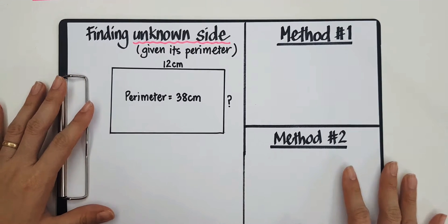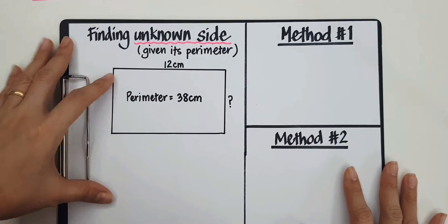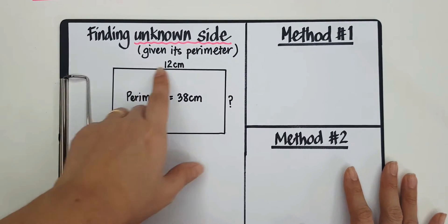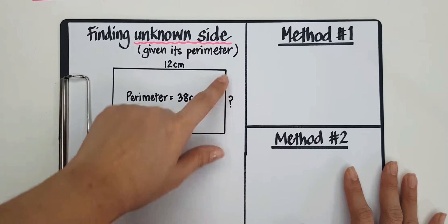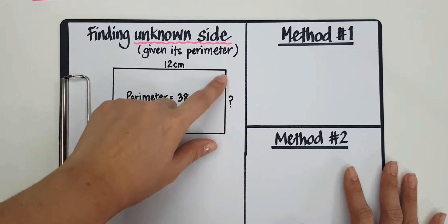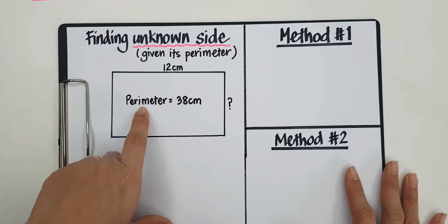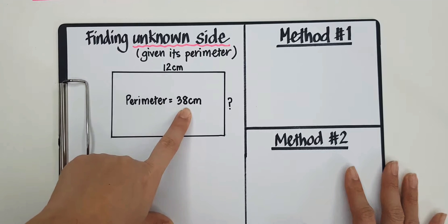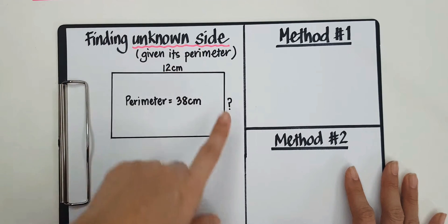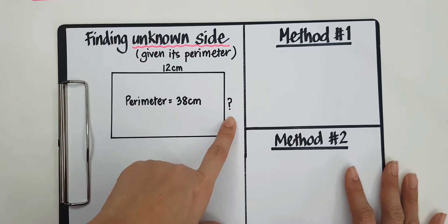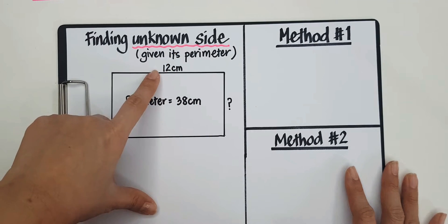In today's problem, we are given a rectangle, and we are given the length of the rectangle, but not the breadth, or what some people would call the width. However, we are given the parameter, and so we want to find the unknown side, which is the breadth, given its parameter and one of the sides.